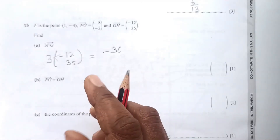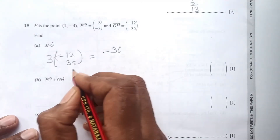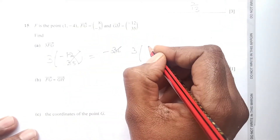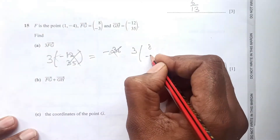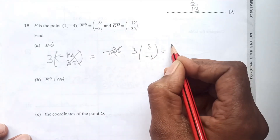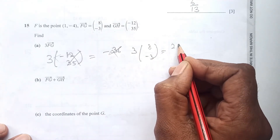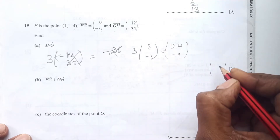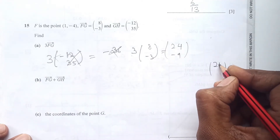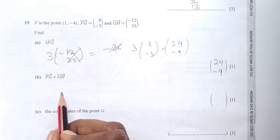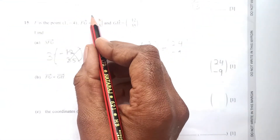Sorry, I took that wrongly. FG is (8, -3). So 3 times FG: 3 times 8 is 24, 3 times -3 is -9. The final answer is (24, -9). Now find FG plus GH.